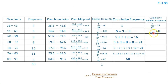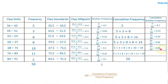The cumulative frequency of the first class is 5; 5 divided by 50 gives 0.1. The cumulative frequency of the second class is 8; 8 divided by 50 gives 0.16. The cumulative frequency of the third class is 16; 16 divided by 50 gives 0.32. The cumulative of the fourth class is 24; 24 divided by 50 gives 0.48. For the fifth class, 34 divided by 50 gives 0.68. For the sixth class, 45 divided by 50 gives 0.9.